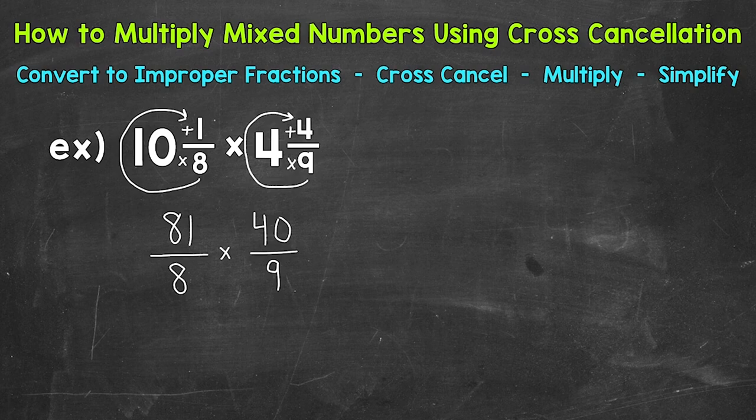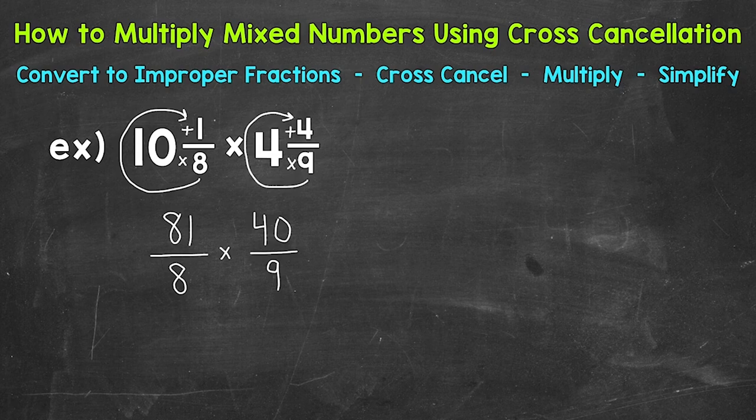At this point we can multiply straight across — 81 times 40 and then 8 times 9. But we can use cross cancellation, which is a way to simplify fractions before multiplying. It gives us smaller and easier numbers to work with, therefore a simpler problem to solve. We cross cancel by looking for common factors between the numerators and denominators — the top and bottom. Think of it as simplifying fractions, but we can look diagonally as well.